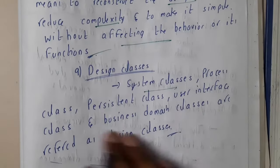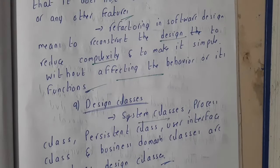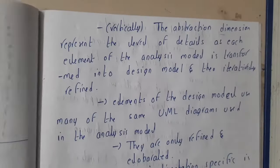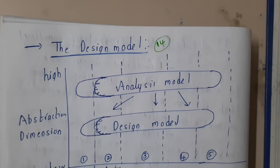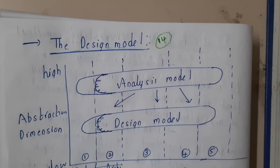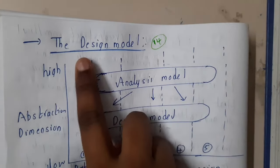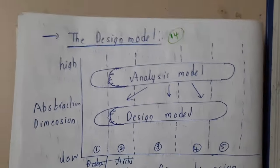After refactoring, we have designing classes — system classes, process classes, and multiple other class types that can be designed. So this covers all the designing concepts. I hope everyone has a clear idea now. In the next lecture, we will go through the basic design model and in the next unit we will discuss design models and architectures in detail. Thank you, and thanks for watching.